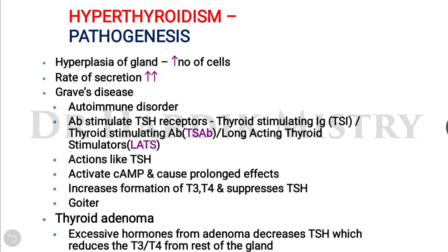The pathogenesis of hyperthyroidism involves hyperplasia of the gland, with an increase in the number of cells and rate of secretion of thyroid hormones. In Graves disease, the pathogenesis involves autoimmune disorders where antibodies stimulate the thyroid stimulating hormone (TSH) receptors.